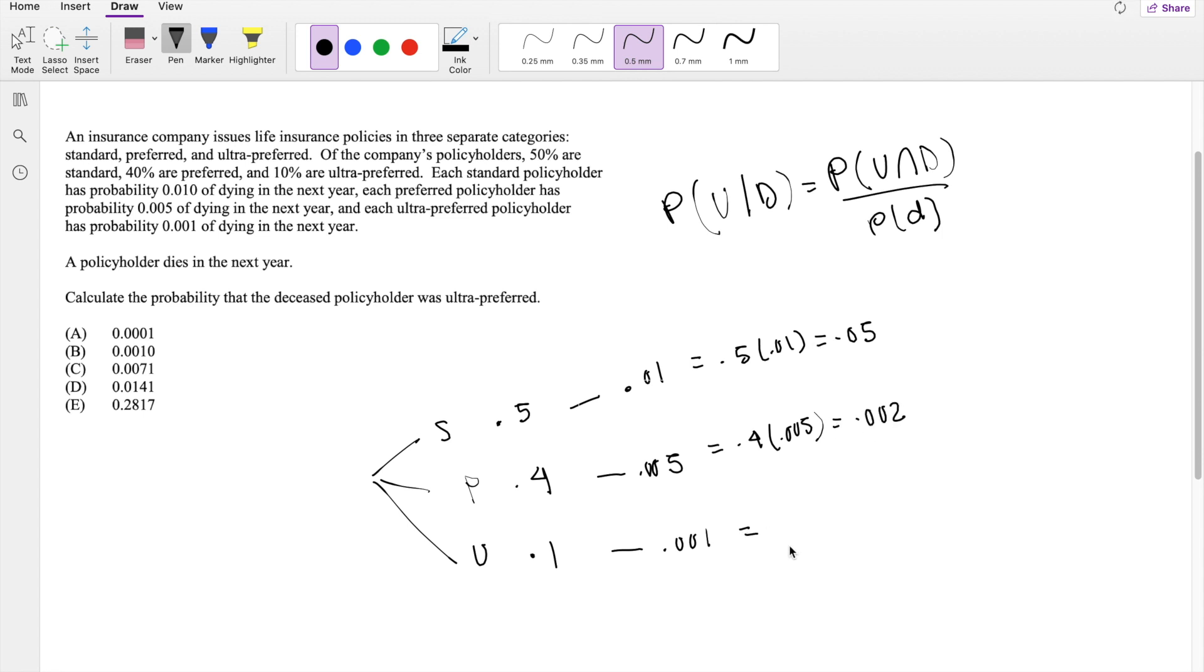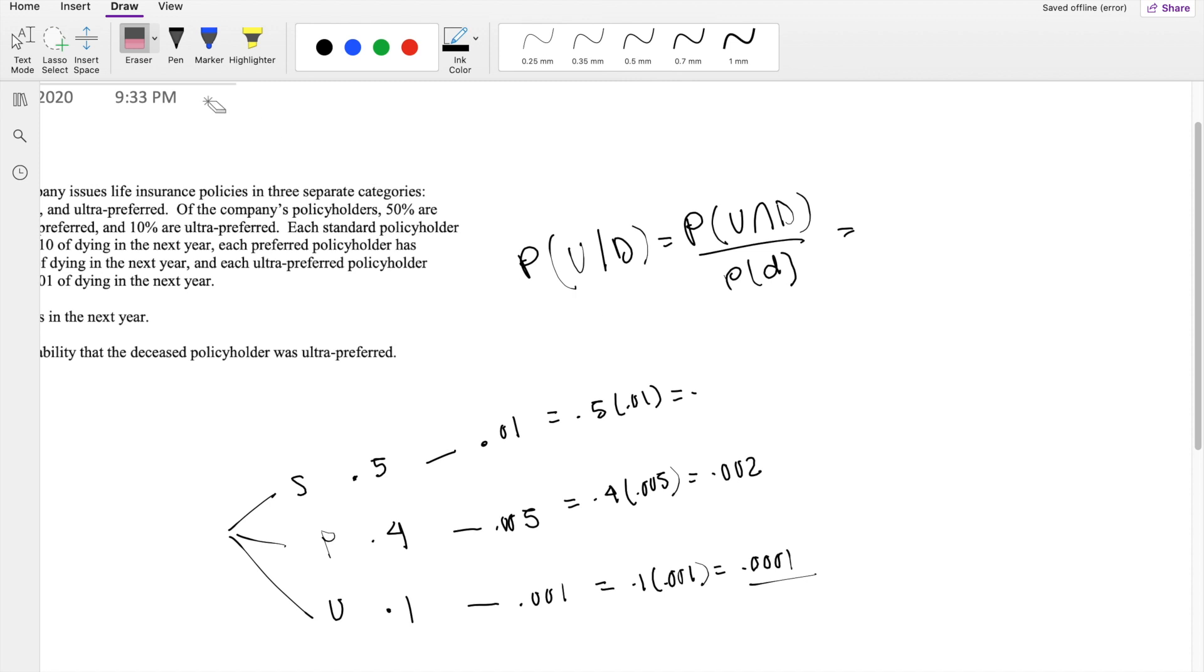And lastly, 0.1 times 0.001 is equal to 0.0001. Oh wait, this one's missing an extra 0 here, 0.005.